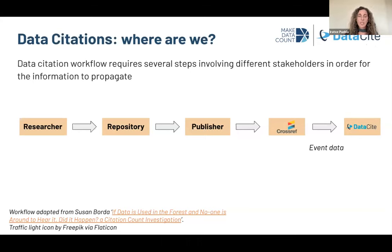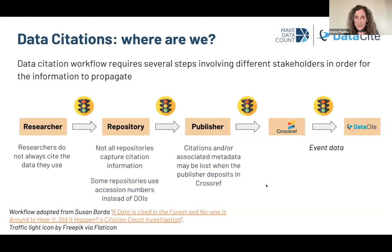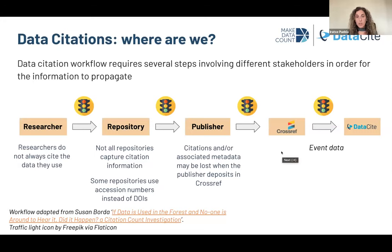There have also been some challenges in relation to the adoption of best practices for data citations. The workflow requires a multi-step process with different stakeholders who have different priorities. Essentially, we need this information to propagate through the system with everyone doing the right thing at each step — if one step fails, the citation will not make it into the systems that enable that information to be exposed to the community. Researchers should cite their data to start that process, but there is not necessarily a strong culture of citing datasets yet.